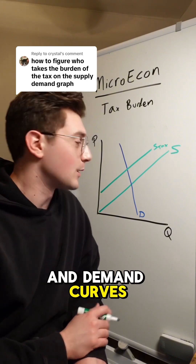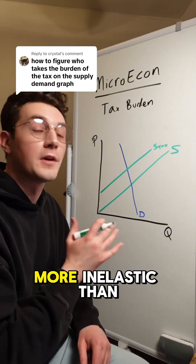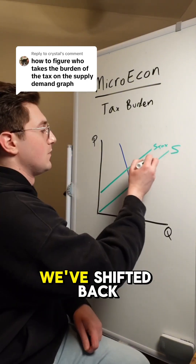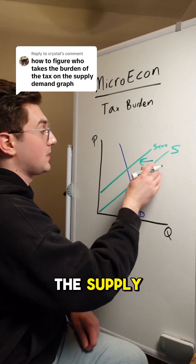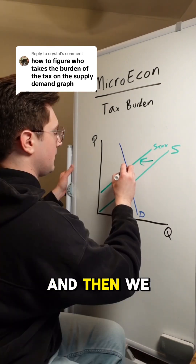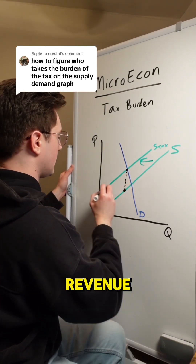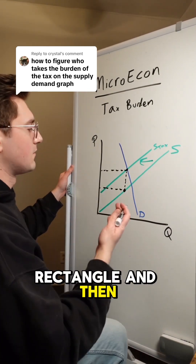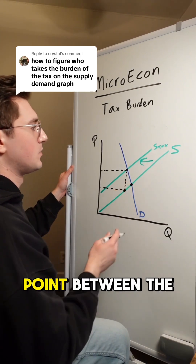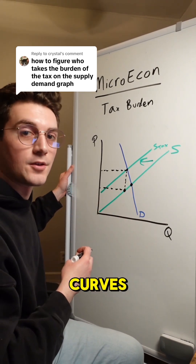Here are our new supply and demand curves, with the demand curve being way more inelastic than the supply curve. We've shifted back the supply curve by the amount of the tax, and then we can start to visualize the tax revenue rectangle.